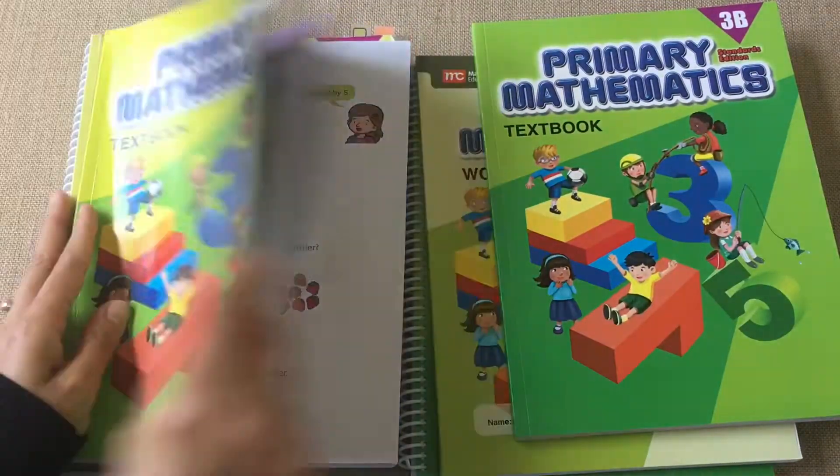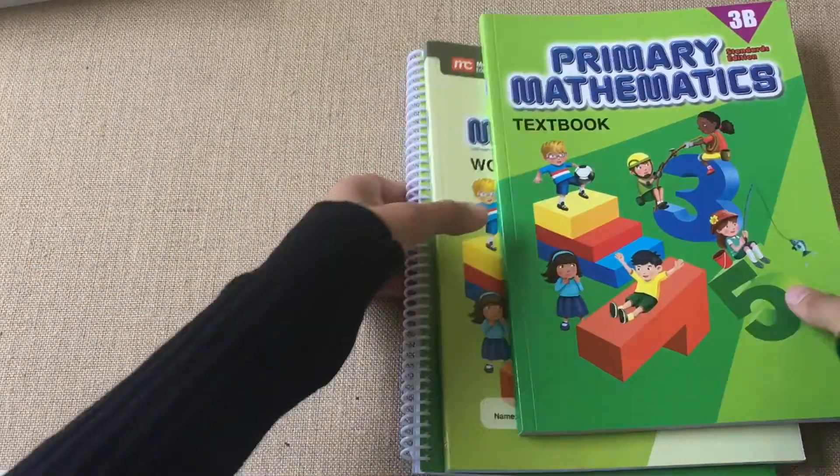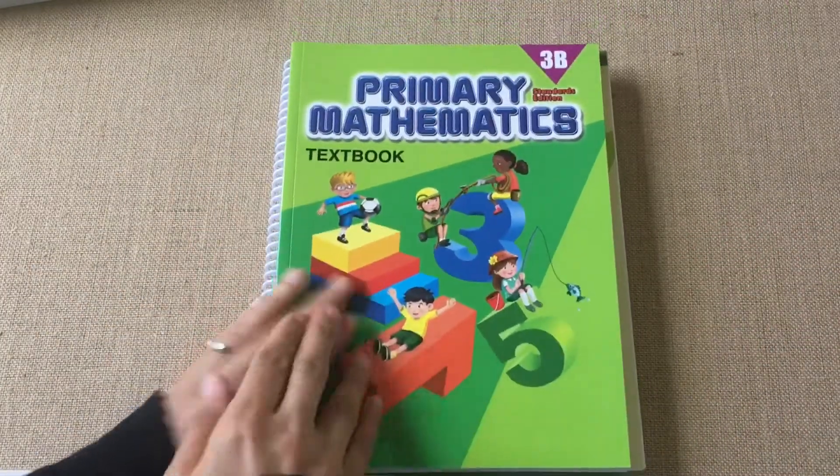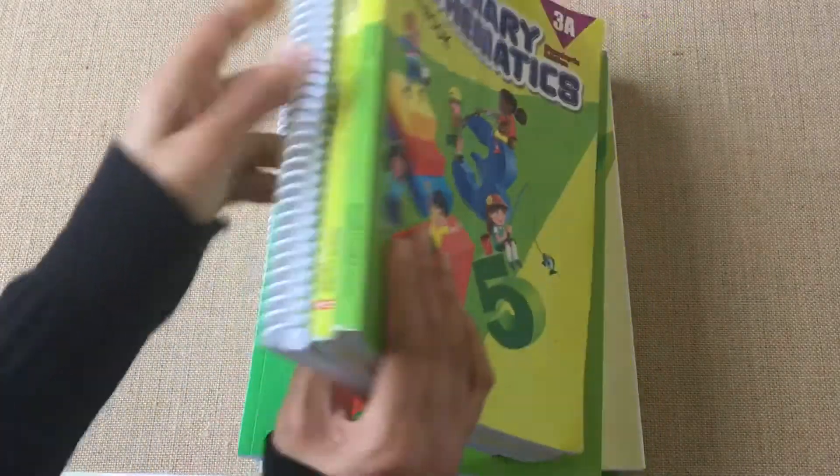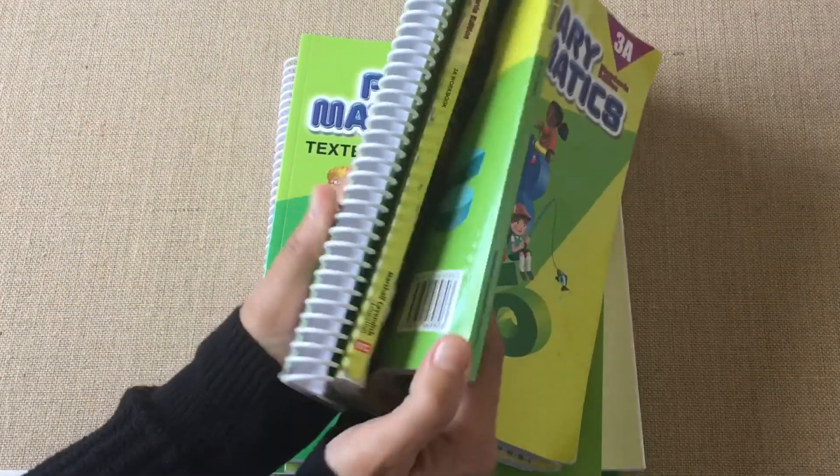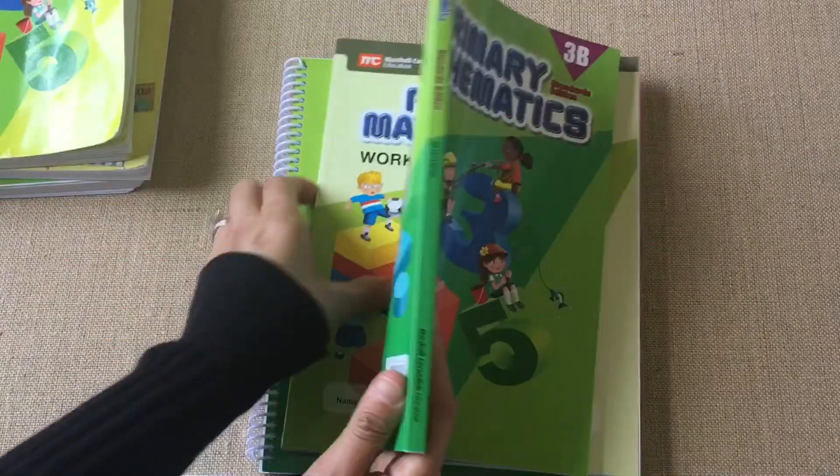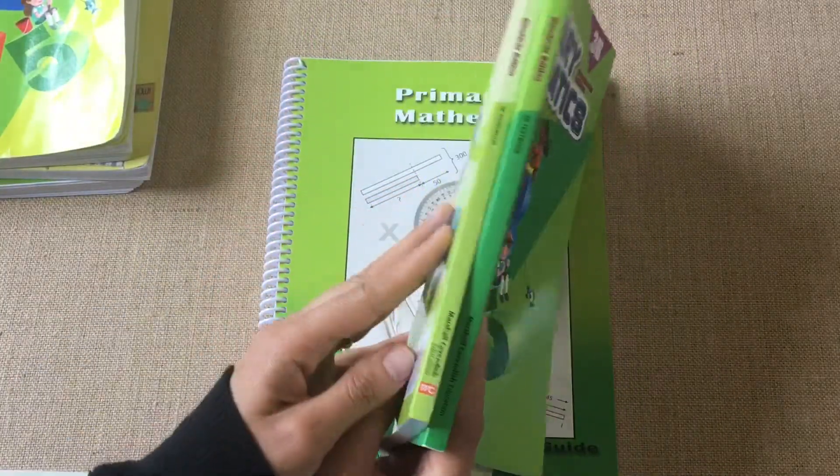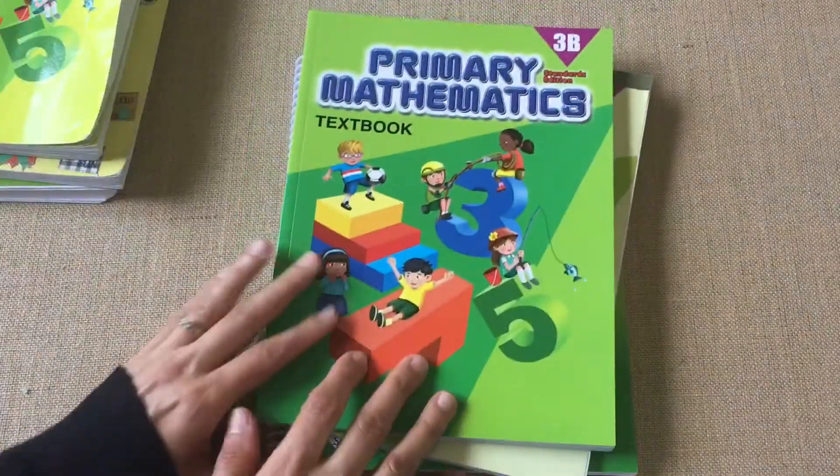That's for one semester: one home instructor's guide, one textbook, and workbook. We've been using this one so I'll show you the next semester's books. Semester one had three books, and here's semester two with textbook, workbook, and teaching guide. Let's take a look.